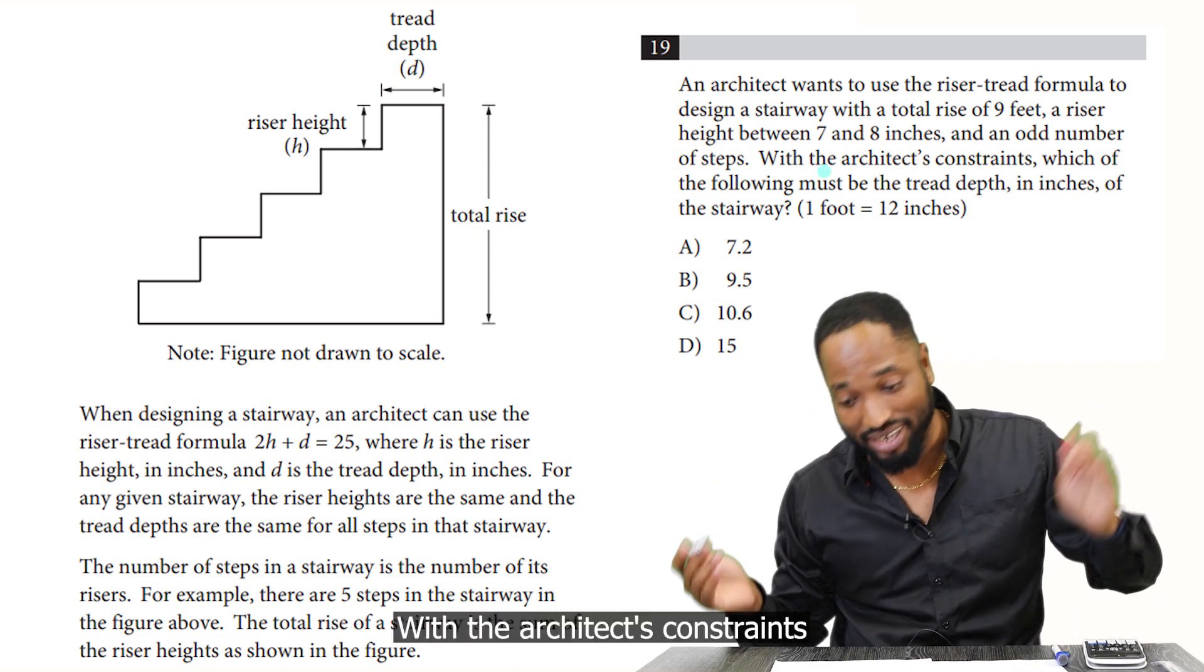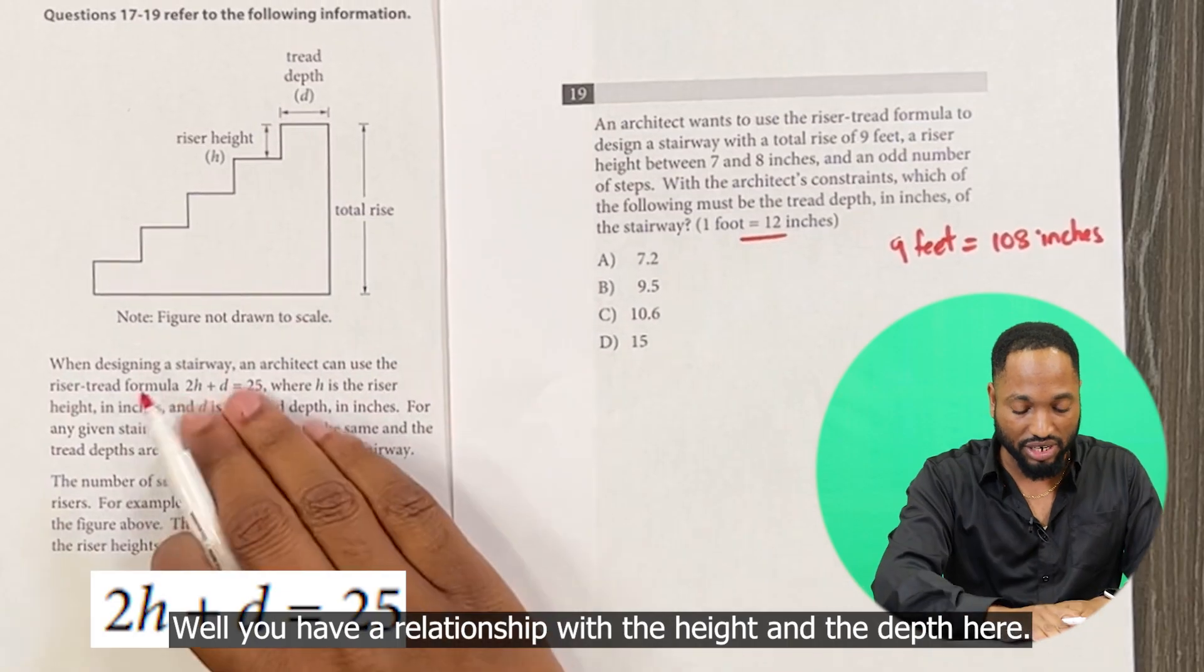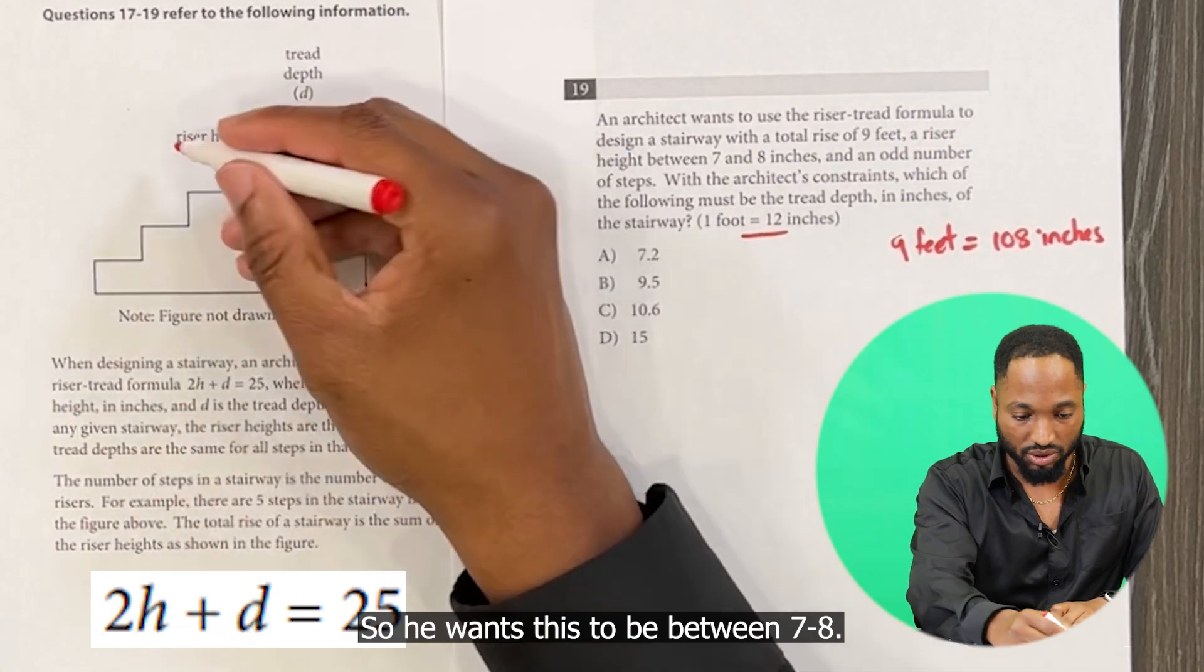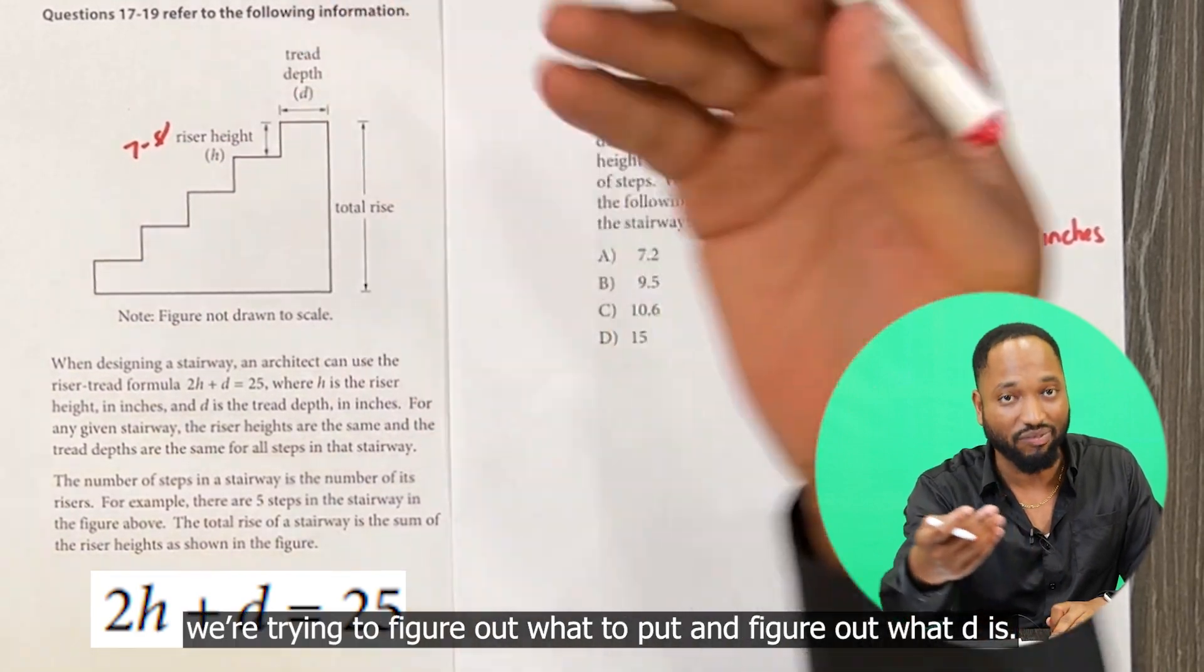With the architect's constraints, which are the following, what must be the tread depth? Well, you have a relationship with the height and the depth here. So he wants this to be between seven or eight, so you can maybe put seven, eight. We're trying to figure out what to put and figure out what d is.